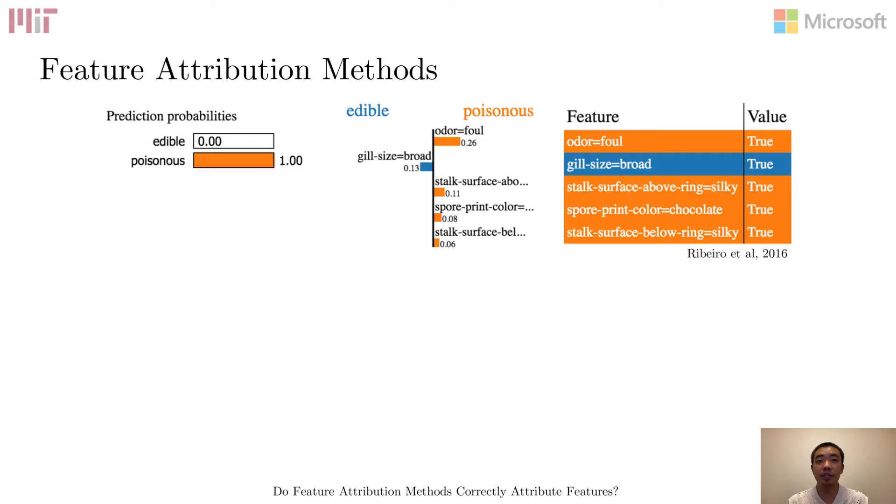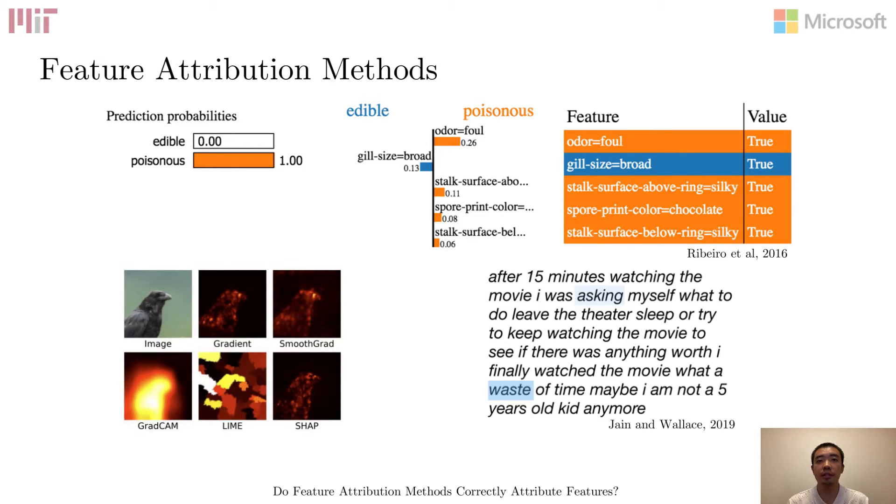Among all explanation styles, feature attribution ones are the most popular. For an input query, the explanation assigns a score to each input feature to represent its importance to the prediction. For example, when predicting whether a mushroom is edible or poisonous, the foul odor feature contributes the most to the poisonous prediction. For image data, the explanation has an attribution value for each pixel, resulting in a heatmap over the image. Such an explanation is also known as a saliency map. For text data, the attribution values are defined over words in the input text.